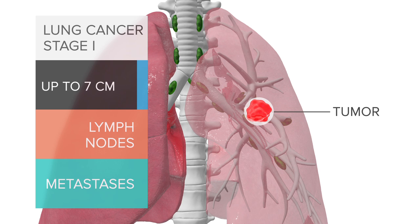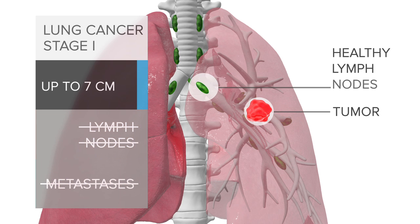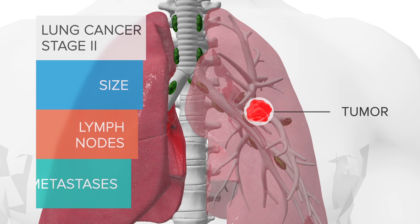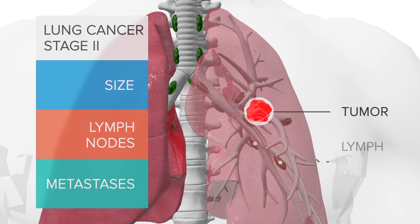A stage one tumor is defined as a tumor that can be any size up to seven centimeters — usually up to six centimeters — that has no lymph node involvement. Those patients are surgical candidates if they have the function to be able to go through an operation.